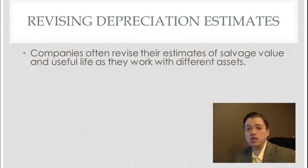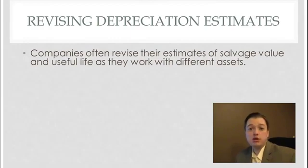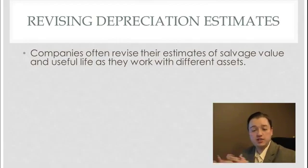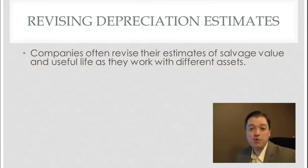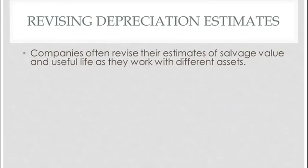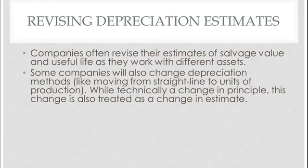For example, I get a piece of equipment, I start using it, I realize this is a gem — it's not going to last for five years, it's going to last for 15. I'm going to slow down my depreciation so that I'm better matching the cost of this asset over 15 years with the revenue it will make us over those 15 years. In addition, companies will often look at the depreciation method and say double declining balance really doesn't match how I use my assets — units of production would work better. So we can switch methods as well, not just change estimates but change methods.